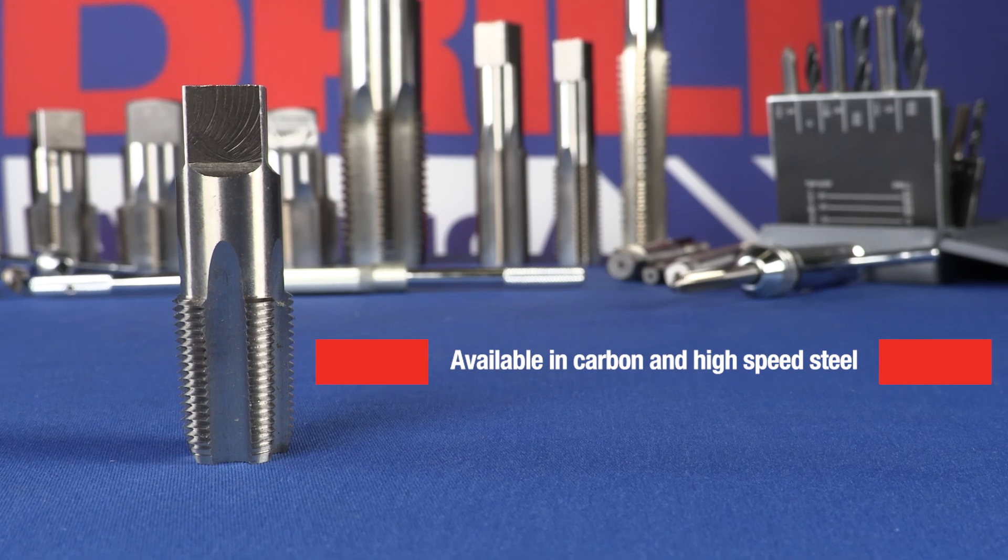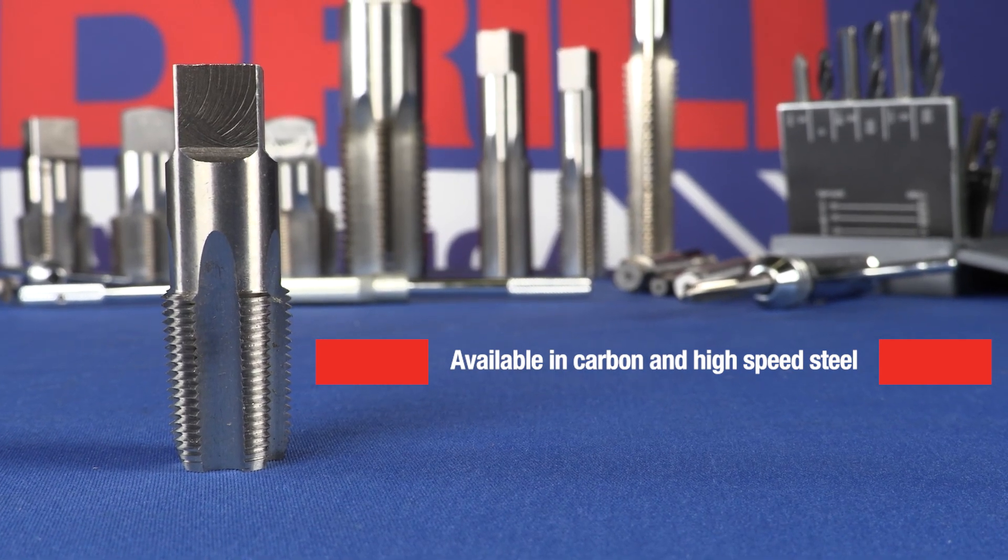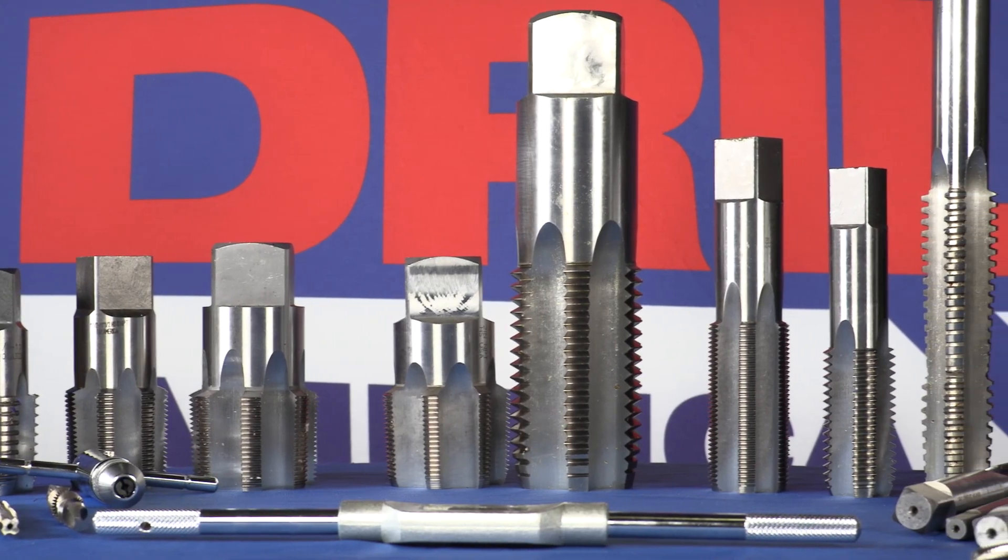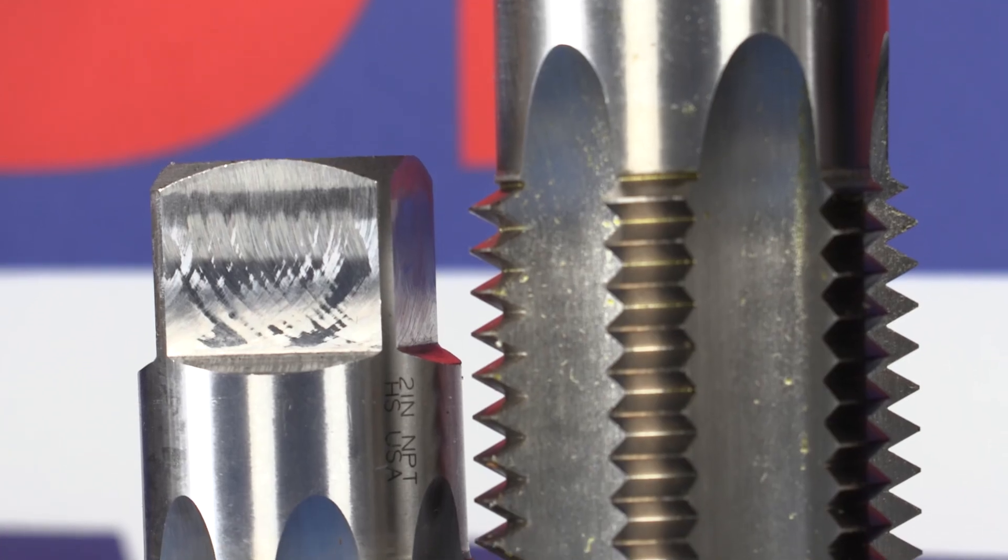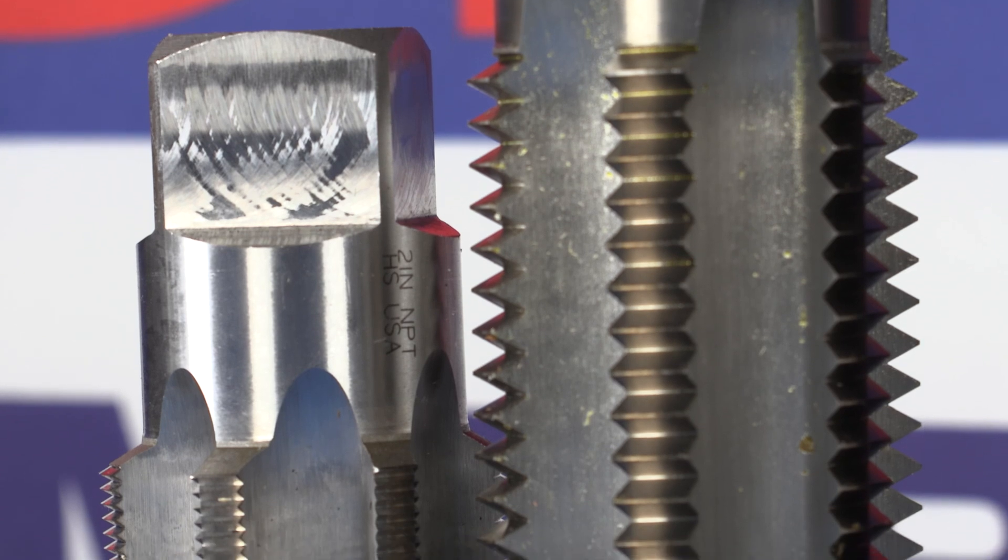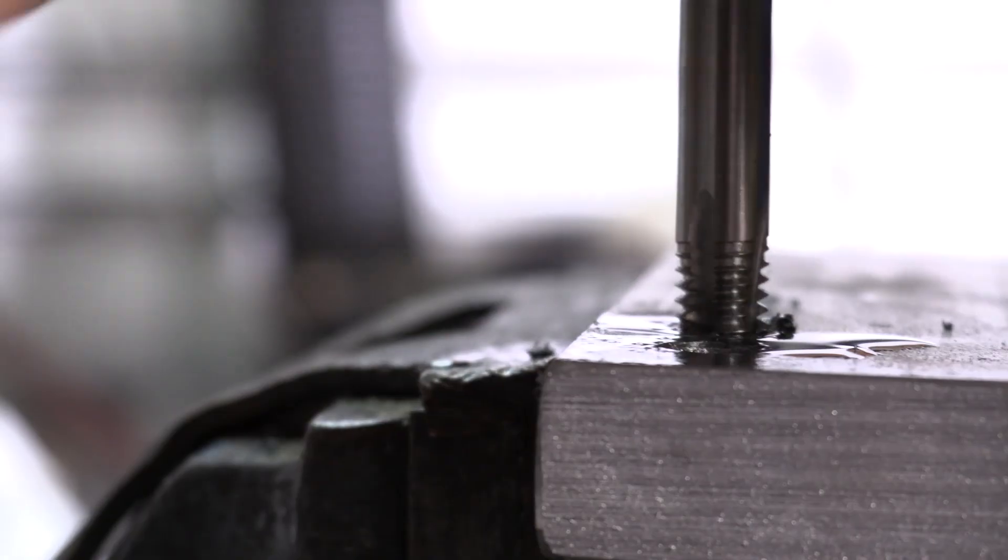They are available in carbon and high-speed steel. Carbon steel taps are intended to repair damaged threads or cut new threads in softer materials such as plastic. Drill America Carbon Steel Taps are the most cost-effective solution for re-threading.